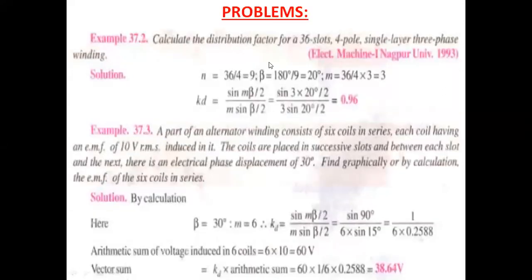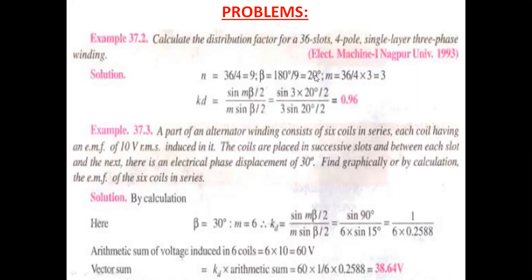Now we will go for problems. First problem: calculate the distribution factor for a 36-slot, 4-pole, single layer, 3-phase winding. We have to find the distribution factor KD, whose formula is KD = sin(Mβ/2) / (M·sin(β/2)). We need to find beta (β) and M values.